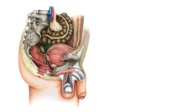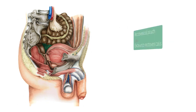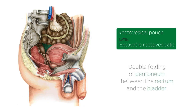There is also an important structure worth highlighting here: the peritoneum, a serous membrane forming the lining of the abdominal cavity. It mainly supports the abdominal organs and serves as a conduit for their blood vessels, lymph vessels, and nerves. The rectovesical pouch, highlighted in green, is a double folding of peritoneum between the rectum and the bladder in the male pelvis.